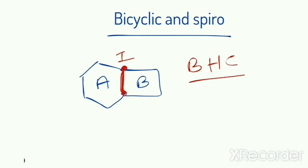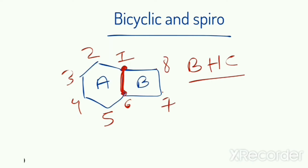If we start numbering with one BHC, we should go towards the larger ring — the ring system with more carbon atoms. In this picture, ring A has 4 carbon atoms and ring B has 2 carbon atoms. So we go towards ring A for numbering: carbon 2, 3, 4, 5, 6, 7, and 8.